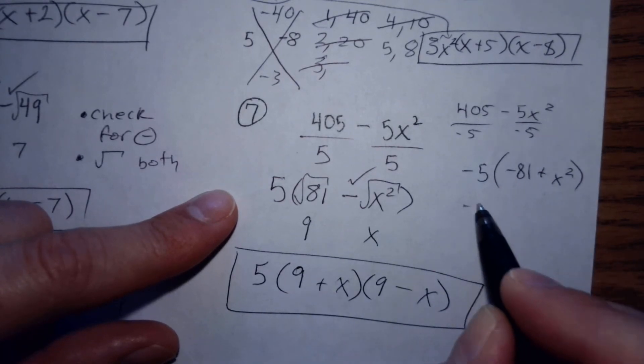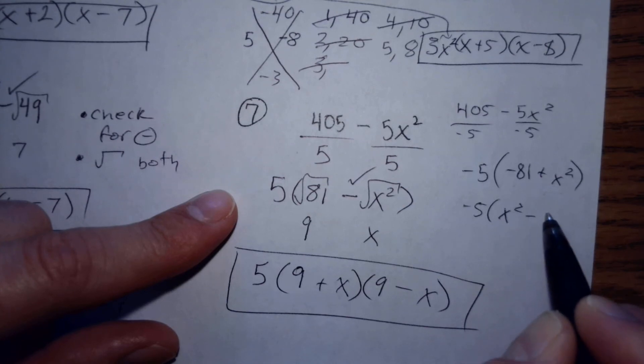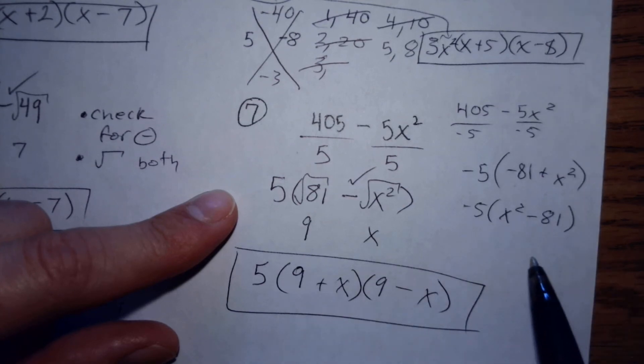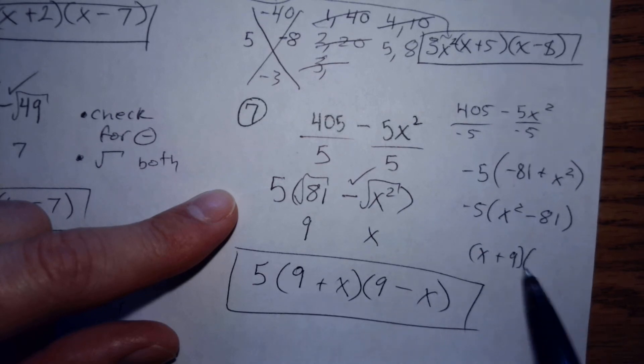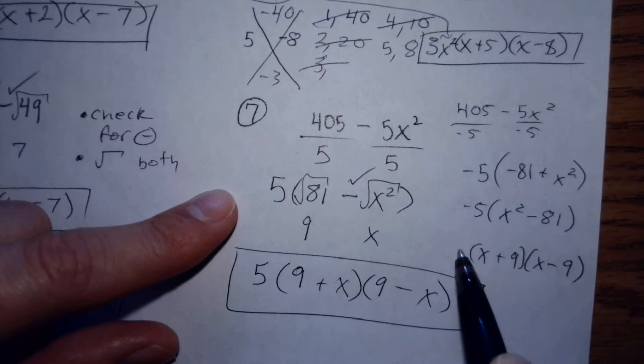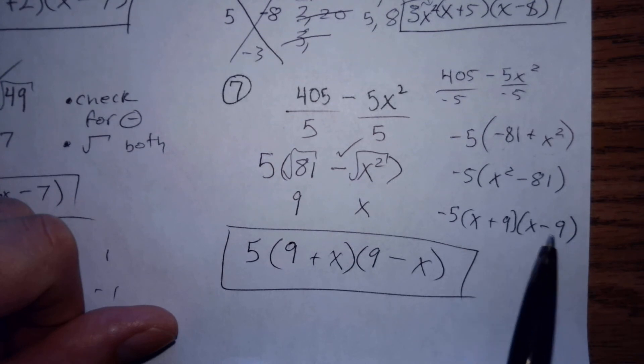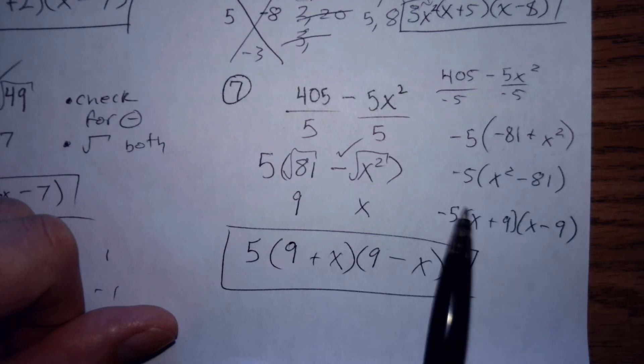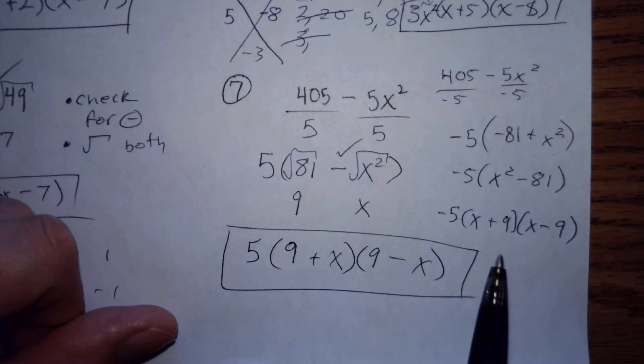And then your answer would be x plus nine, x minus nine with a negative five on the outside. So that was the other answer I accepted. If you switched them around on this but you didn't have the negative, it was marked wrong because it's not the same thing.